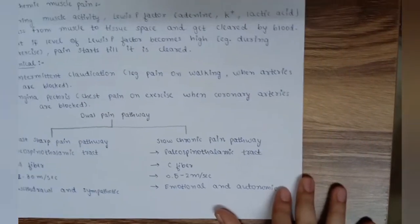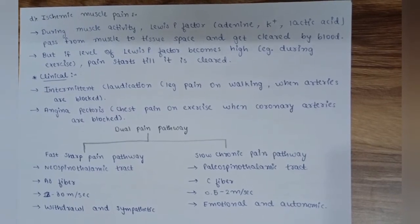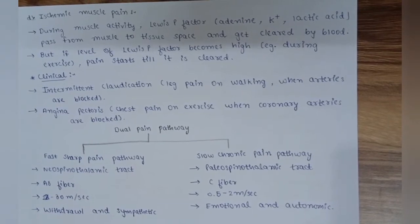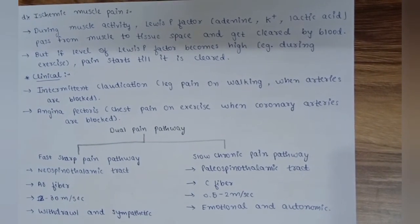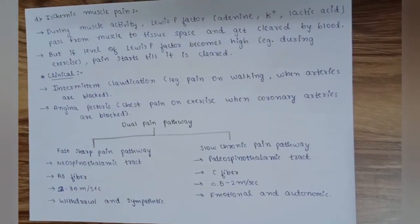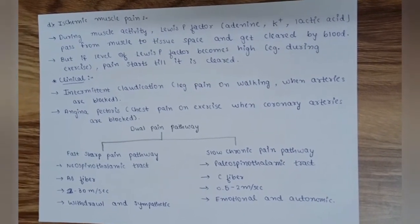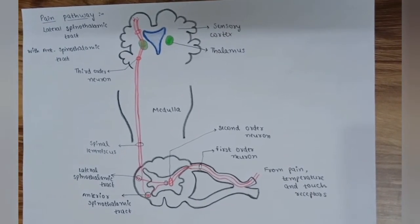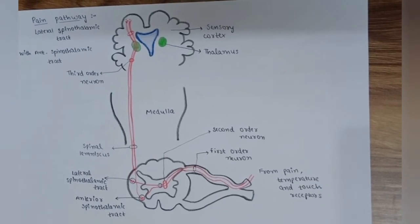Pain pathway is dual in nature — different for fast and slow pain. Fast sharp pain pathway is the neospinothalamic tract; slow chronic pain pathway is the paleospinothalamic tract. Fast pain is carried by A-delta fibers (speed 12–30 m/s); slow pain is carried by C fibers (speed 0.5–2 m/s). Reactions with fast pain are withdrawal and sympathetic responses; slow pain reactions are emotional and autonomic. Fibers from pain, temperature, and touch receptors enter the spinal cord through the dorsal root and dorsal horn.